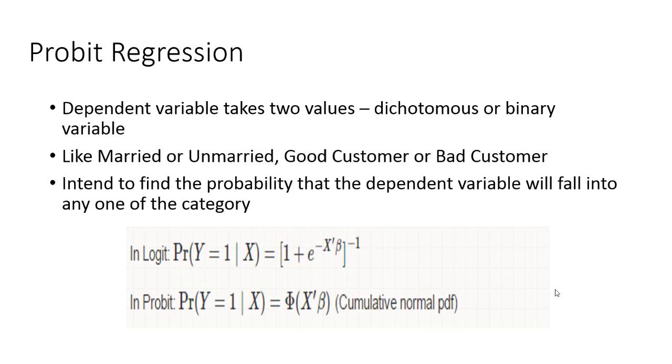The main difference mathematically between logistic and Probit regression is in the link function. In logistic regression, as you can see on the screen, the probability that Y, the dependent variable, equals 1 given X has a logistic distribution.